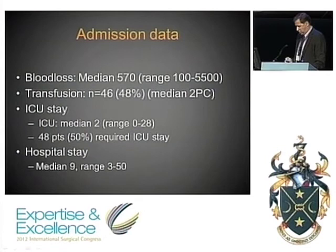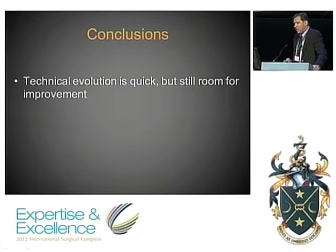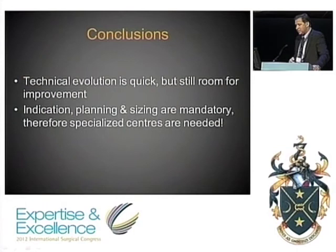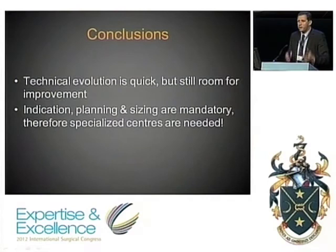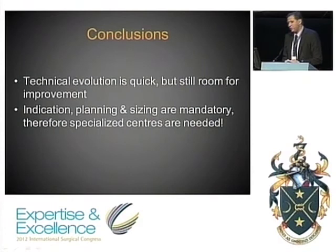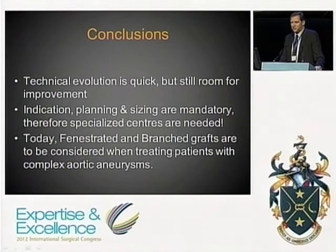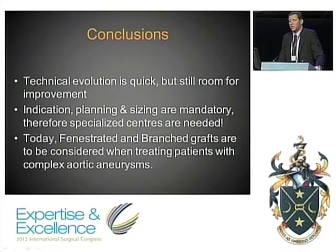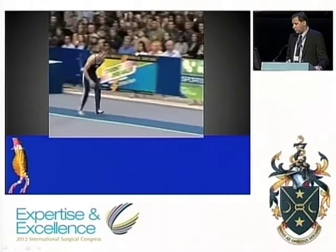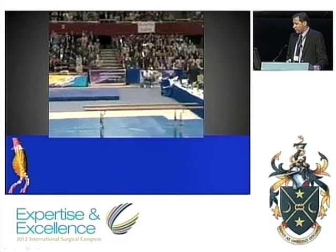In conclusion, we have moved forward very quickly, but there is still a lot of room to improve these techniques. Indication, planning, and sizing are very important. You must be aware of anatomical limitations and your own center's limitations — these cases should only be done in specialized centers. Fenestrated and branched stent grafts should always be considered when patients present with a complex aortic aneurysm. For thoracoabdominal aneurysms, you really need a very good reason to treat them by open means. If we take it step by step, we will find the best way to treat our patients.